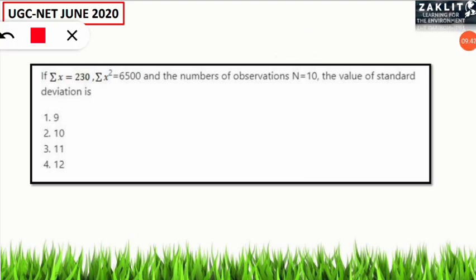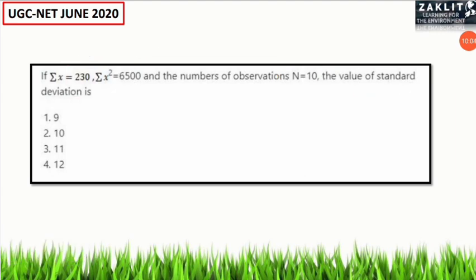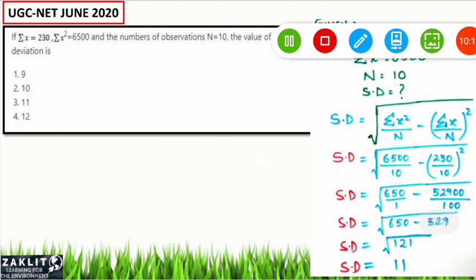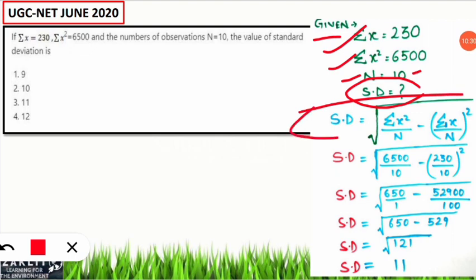The next question was from statistics. The question: if Σx = 230, Σx² = 650, and n = 10, what is the standard deviation? The formula is: standard deviation = √(Σx²/n − (Σx/n)²). Note the difference — n is not squared in the first term but is squared in the second. Substituting: 650/10 = 65, and (230/10)² = (23)² = 529.